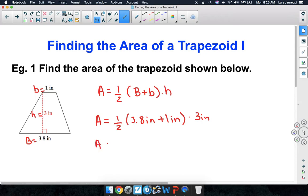Notice, here we're going to have A = 1/2. 3.8 inches plus 1 inch equals 4.8 inches, and then we're going to multiply that by 3 inches.